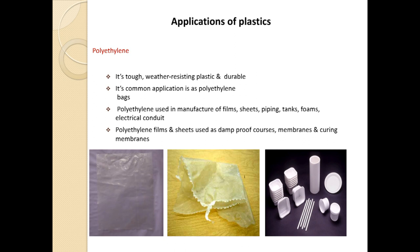Now we will study the applications of plastics one by one, looking at each polymer type and its applications. The first polymer is polyethylene. We make plastic bags, films, sheets, pipes, tanks, and electric conduits from polyethylene. It is a tough, weather-resistant, and durable plastic. Polyethylene films and sheets are also used as damp-proof course membranes and curing membranes.